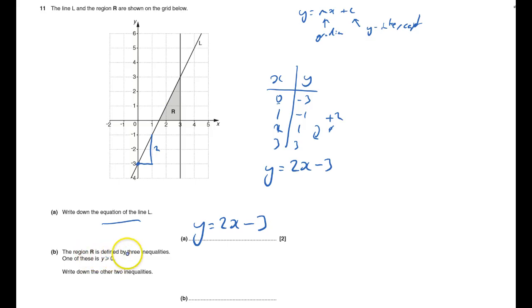The region R is defined by three inequalities. One of these is y is greater than or equal to 0. That means it's above that line. It's got to be beneath L. So it's got to be less than or equal to L. And so I get y is less than or equal to 2x minus 3.